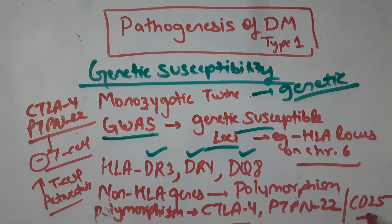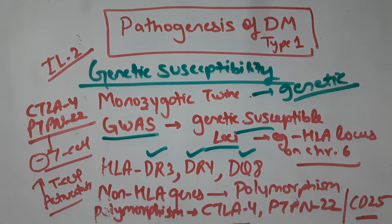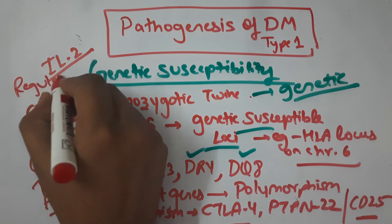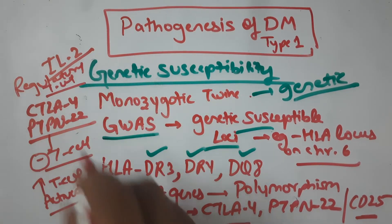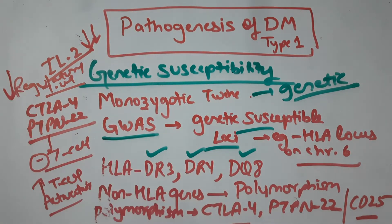CD-25 is the gene that encodes for the alpha chain of the IL-2 receptor. IL-2 receptors are required for the maintenance of regulatory T-cell function. If there is polymorphism in CD-25, the IL-2 receptor activity decreases, so the regulatory T-cell function decreases, and therefore the activation of effector T cells will increase.